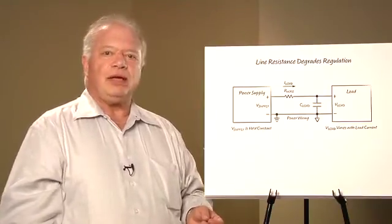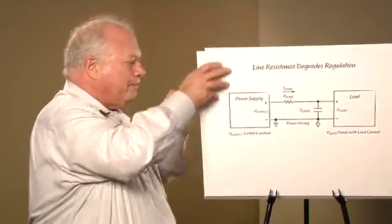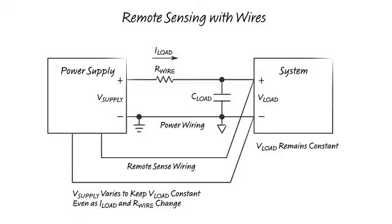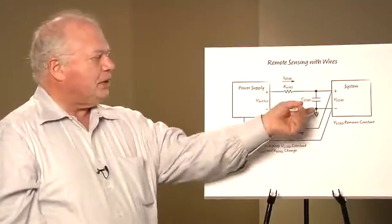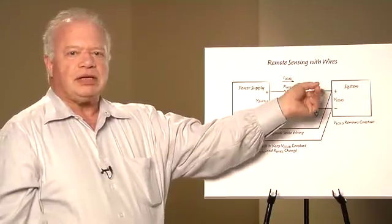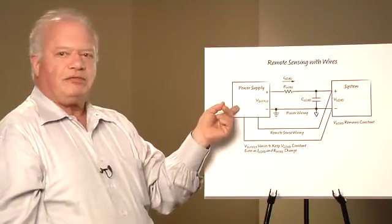So there have been ways to improve this, and the most common way is to use remote sensing. Here, we run an extra pair of wires from the power supply over to the load, and the extra wires actually sense the voltage at the load and allow the power supply to correct for it.